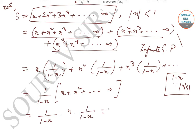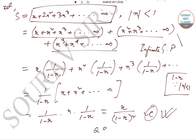This further simplifies to (1/(1−x)) times x·(1/(1−x)), which gives us x/(1−x)², which is option C. Today we have solved question number nine, question number ten, and question number eleven. We'll solve the remaining questions in subsequent videos. Keep watching Sorofsus Classes for more solutions, and all the best for your upcoming exams. Thank you very much.